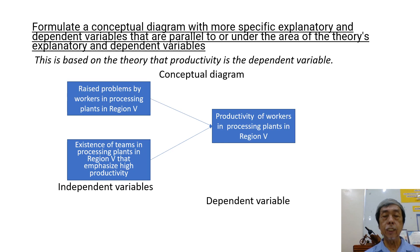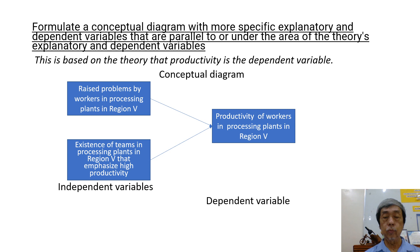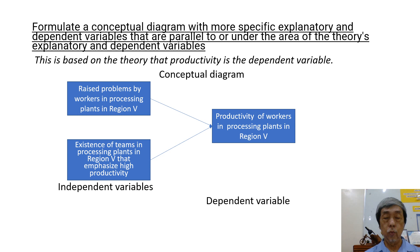On the basis of such theoretical diagram and identified independent and dependent variables of the theory, we can now come up with our conceptual diagram. The conceptual diagram indicates the specific variables which are based on the theory's variables.